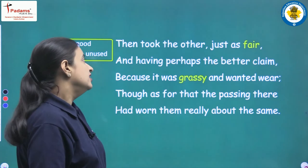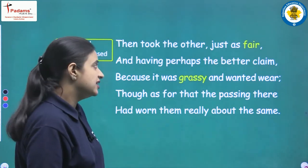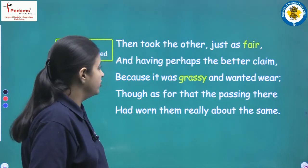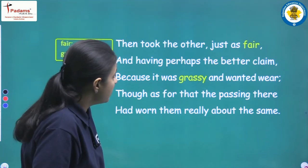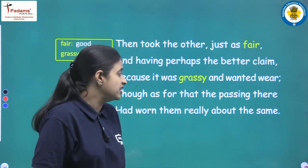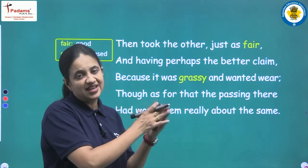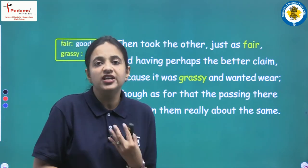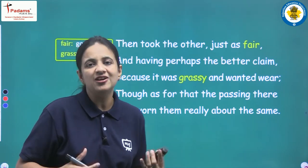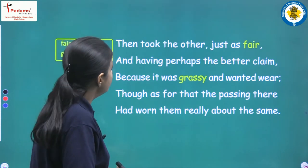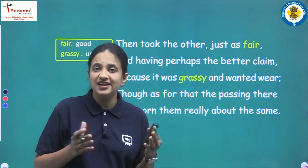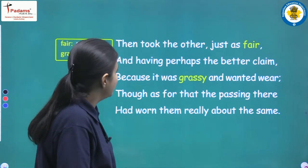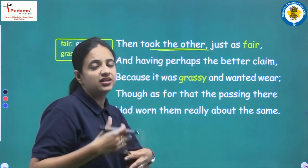Now the second stanza: 'Then took the other, just as fair, and having perhaps the better claim, because it was grassy and wanted wear. Though as for that, the passing there had worn them really about the same.' After a lot of thinking and calculation, the poet finally made his decision. He took the other road — the second option — which seemed just as good.